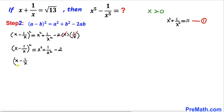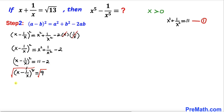Therefore this equation becomes (x - 1/x)² equals 11 minus 2, which is 9. Taking the square root on both sides, the square and square root undo each other, so we end up with x minus 1 over x equal to positive 3, since we know that x is greater than 0. Let's call this equation number 2.